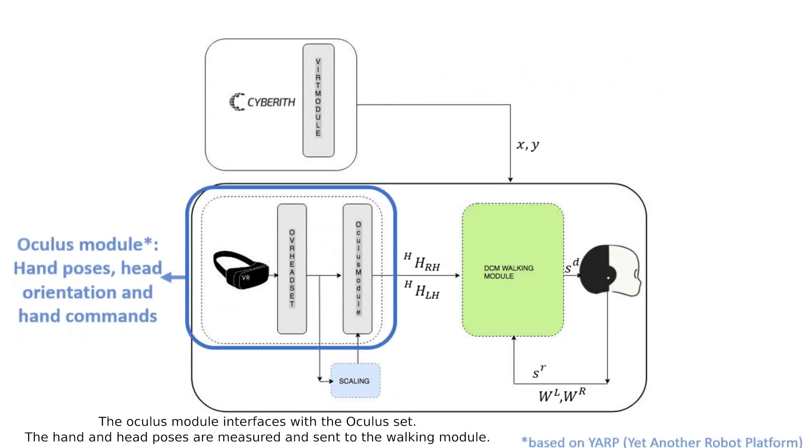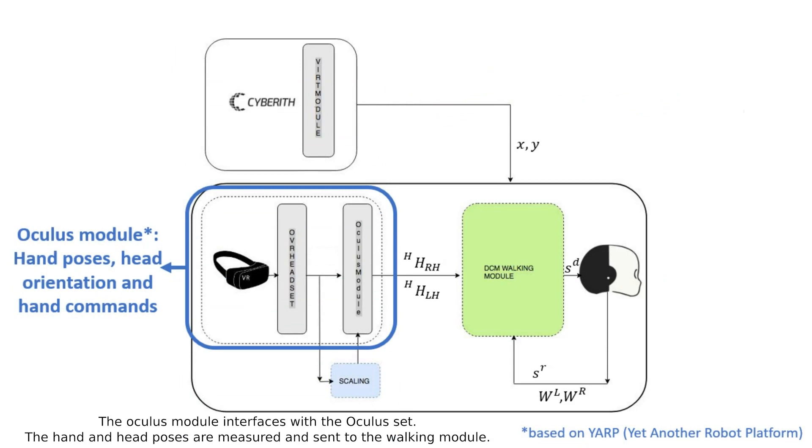The Oculus module interfaces with the Oculus Set. The hand and head poses are measured and sent to the walking module. The buttons of the Oculus Touch are used to send additional commands to the robot, such as grasping.